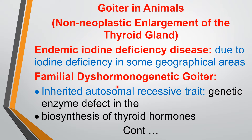Another name is familial dishormonogenetic goiter. It is due to an inherited autosomal recessive trait, so it is a hereditary disease. There is a genetic enzyme defect in the biosynthesis of thyroid hormone. It is called familial because the hereditary genetic factor and improper biosynthesis of thyroid hormone cause the goiter.